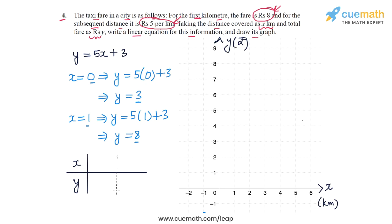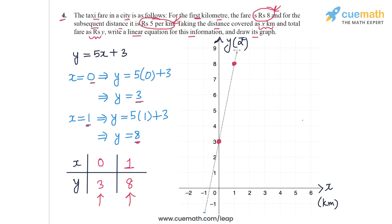We write these two solutions in an x-y table: x equals 0 with y equals 3, and x equals 1 with y equals 8. Now we plot these two solutions: (0, 3) is on the y-axis, and (1, 8) is the next point. We then draw the line through these two points.